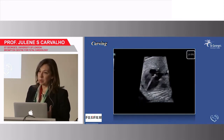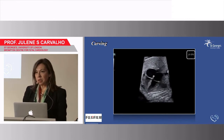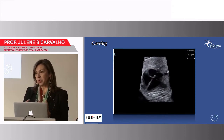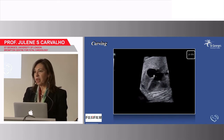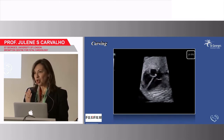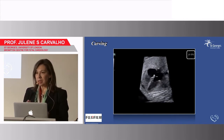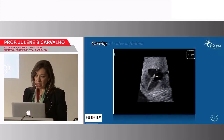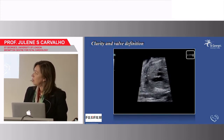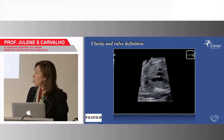A lot of the problems with post-processing is if you put the picture into post-processing and don't grade it, you can clean too much of the information. At the same time, you can lose information, or you can get very thick echoes to make the picture smooth. So it's important that we are able to define structures — like here, one of the valves, the pulmonary valve, in our three-vessel view.